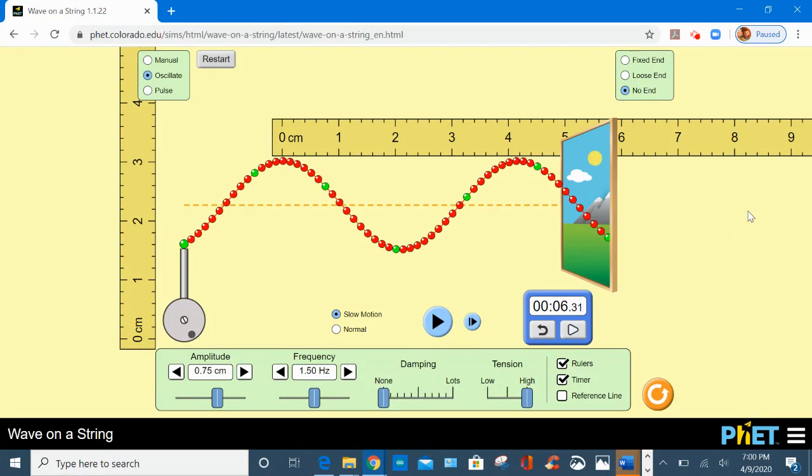The speed of this wave is calculated by the wavelength times the frequency. So the wavelength here is 4.2 centimeters, the frequency my calculated one is 1.58 hertz. So 4.2 centimeters times 1.58, so my speed is 6.6 centimeters per second.